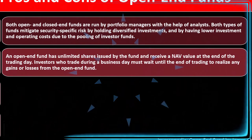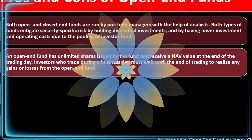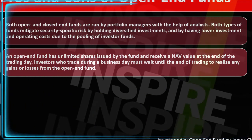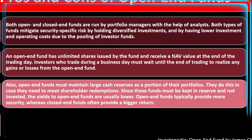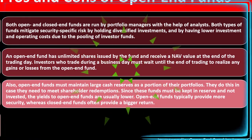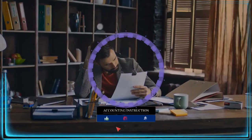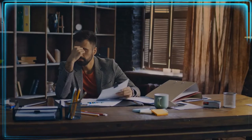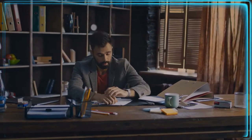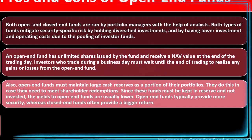Or you might tie the manager to a specific sector, or give them more leeway depending on your view of management strategy and how much you want to pay for it. An open-end fund has unlimited shares issued by the fund and receives a NAV at the end of the trading day. Investors who trade during a business day must wait until end of day to realize any gains or losses. Open-end funds must also maintain large cash reserves as a portion of their portfolio in case they need to meet shareholder redemptions — which somewhat limits the revenue generated.